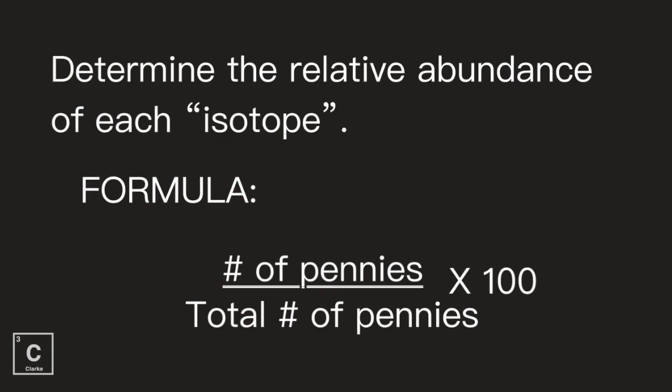Again, that should be your bars as well. Are we seeing that correlation? Because we had two isotopes of pennies, you should have two bars on your graph.